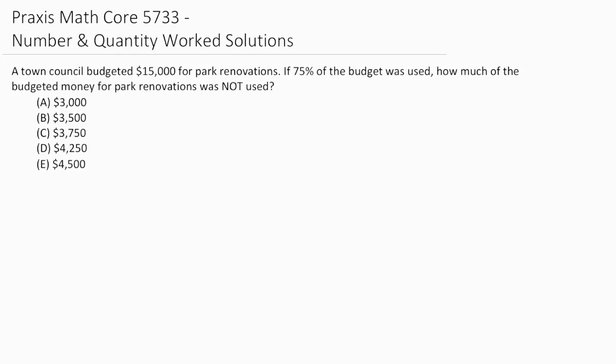Whenever I'm doing word problems, I like to underline or highlight the key parts so I know what the problem has given me and what I'm solving for. It tells us that the budget was $15,000 and 75% of that was used. The question is asking us what was not used or how much of the budget was left over.